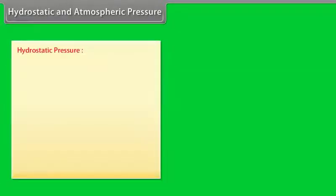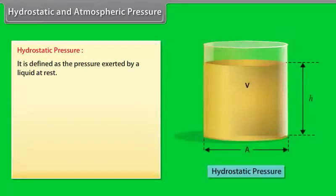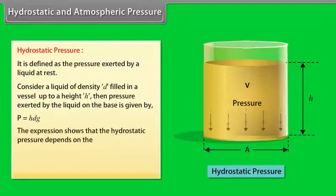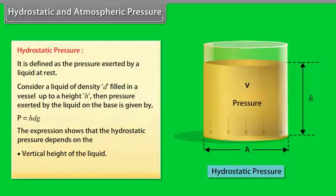Hydrostatic pressure is defined as the pressure exerted by a liquid at rest. Consider a liquid of density D filled in a vessel up to a height H. Then, pressure exerted by the liquid on the base is given by P equals H D G. The expression shows that the hydrostatic pressure depends on the vertical height of the liquid and density of the liquid.